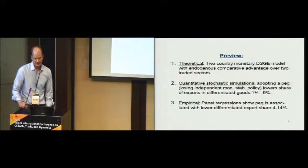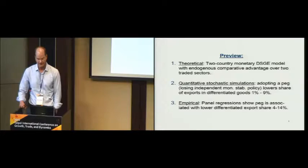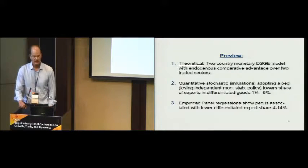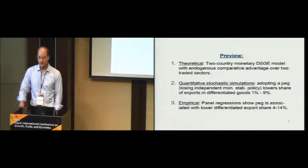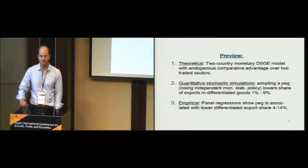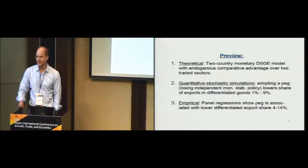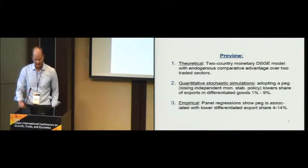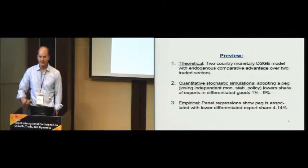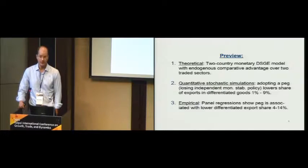To preview the results: we develop a two-country, two-good monetary DSGE model with endogenous comparative advantage over two trade sectors. Quantitative stochastic simulations indicate that adopting a peg — giving up your ability to tailor monetary policy to deal with macroeconomic uncertainty — will lower the share of your exports that are in differentiated goods by one to nine percent, which by macroeconomic standards is quite large. We also run panel regressions showing that pegs giving up monetary autonomy and discouraging differentiated exports actually leads to a substantial fall in the share of differentiated goods in your export bundle by four to fourteen percent depending on the specification.